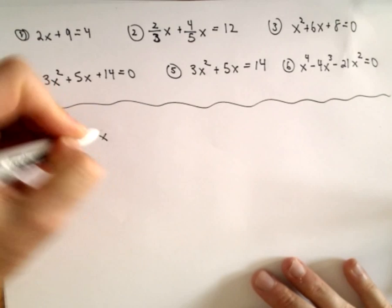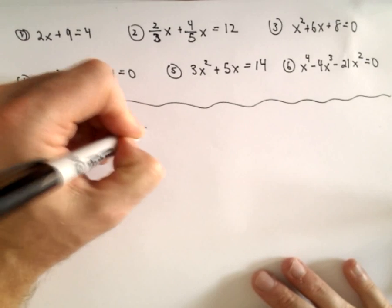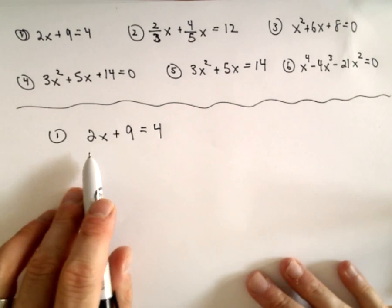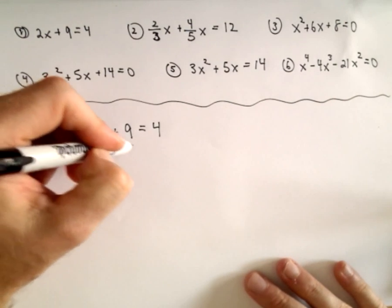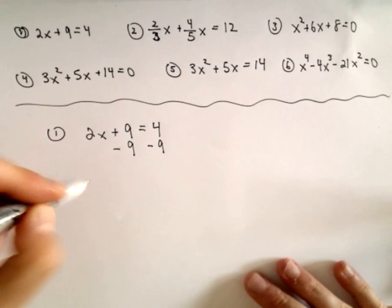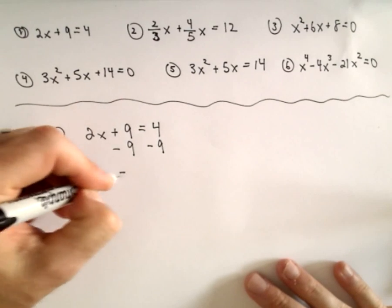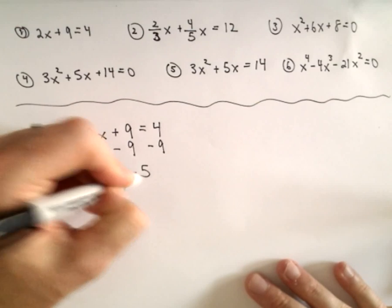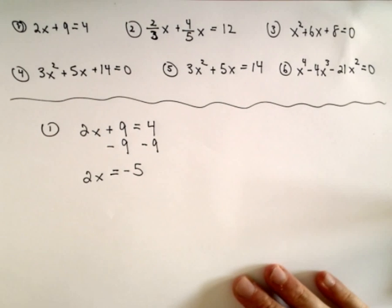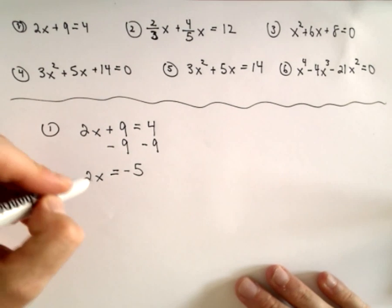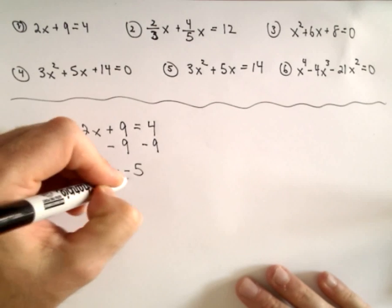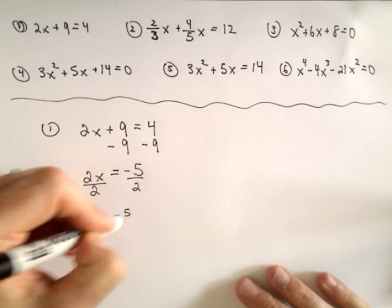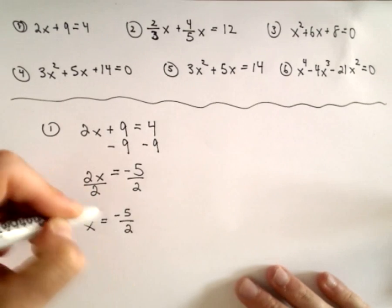So 2x plus 9 equals 4. Nothing too bad here — the idea is we just want to isolate the x. The first thing I would do is just subtract 9 from both sides. That'll leave us with 2x on the left, and 4 minus 9 is going to leave us with negative 5. Now to get x by itself, since we're multiplying by 2, we divide both sides by 2 and we'll get our solution of x equals negative 5 over 2.